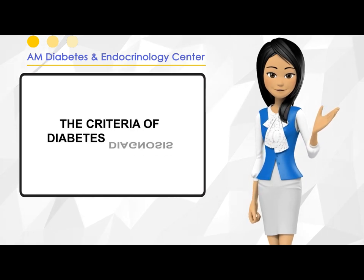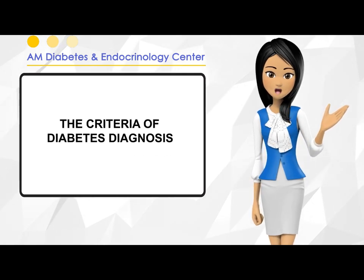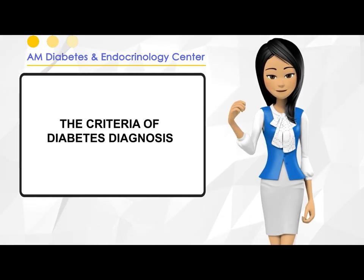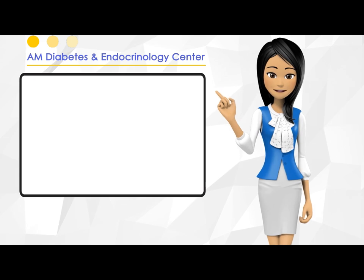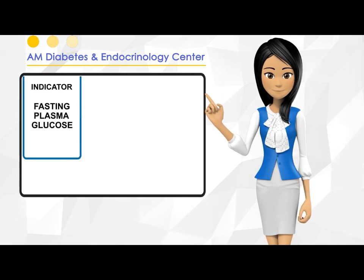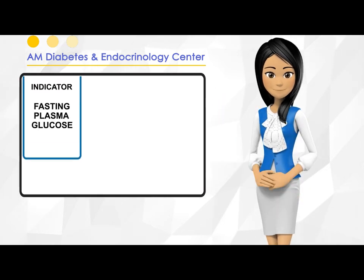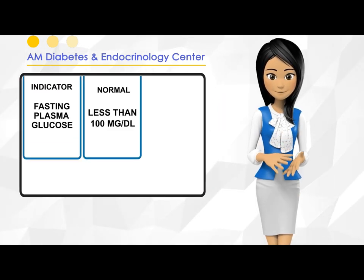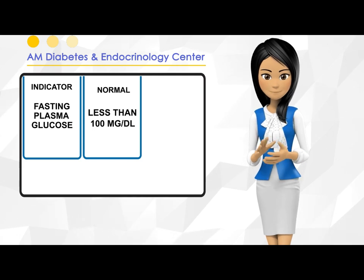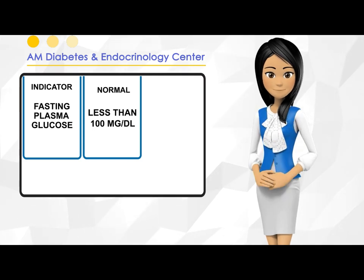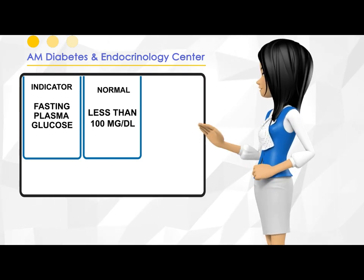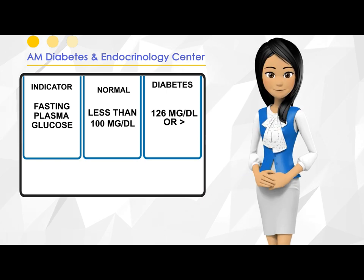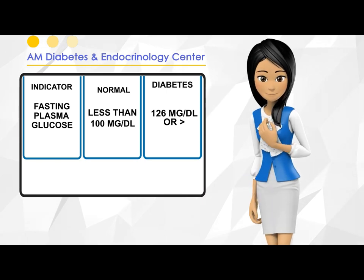To recap, the diagnostic criteria of diabetes is as follows. Indicator: fasting plasma glucose. Normal: less than 100 milligrams per deciliter. Diabetes: 126 milligrams per deciliter or greater.